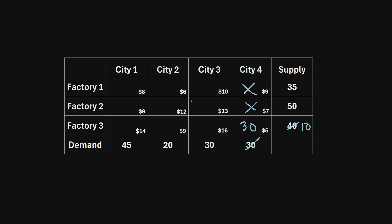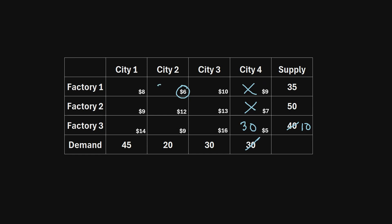Repeating the process with the remaining cells, the next lowest shipping cost is $6 per unit, which belongs to city two's column. City two has a total demand of 20. Factory one has a supply of 35, so it can fully meet that demand. We send 20 units through this route, cross out city two's demand, and reduce factory one's supply from 35 to 15.